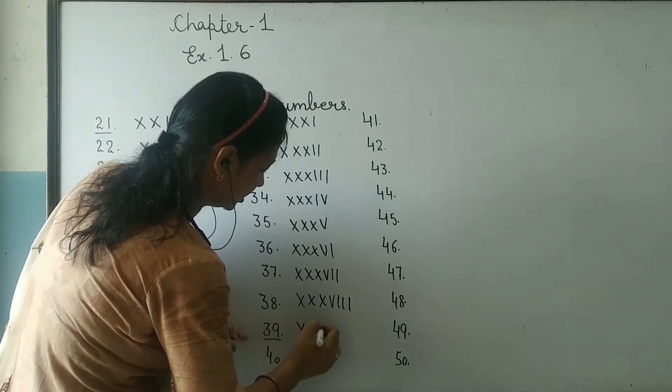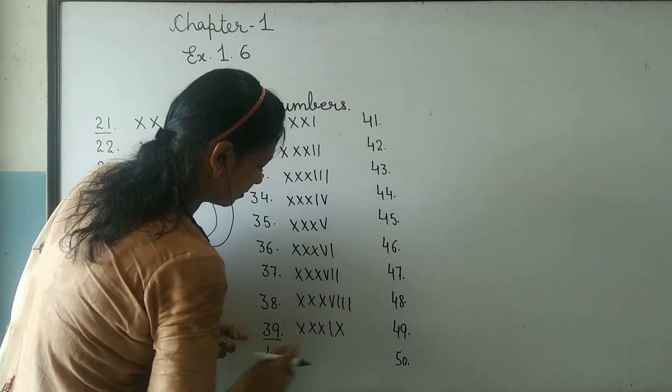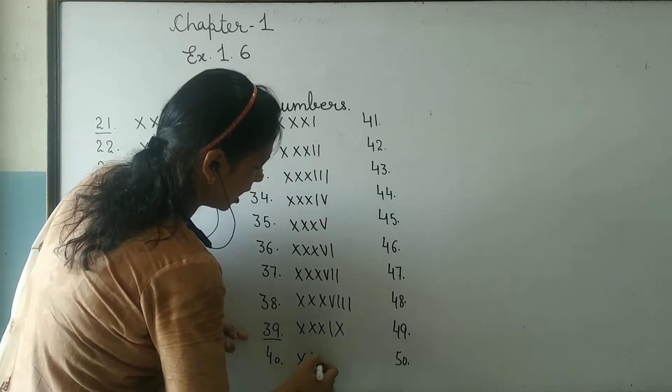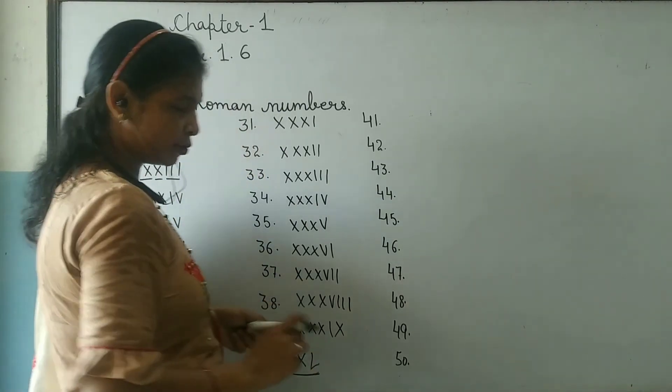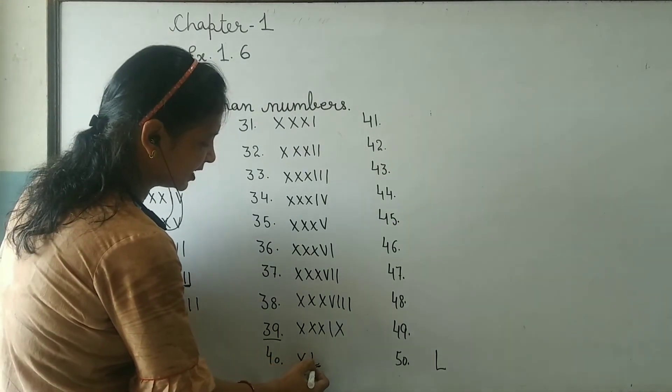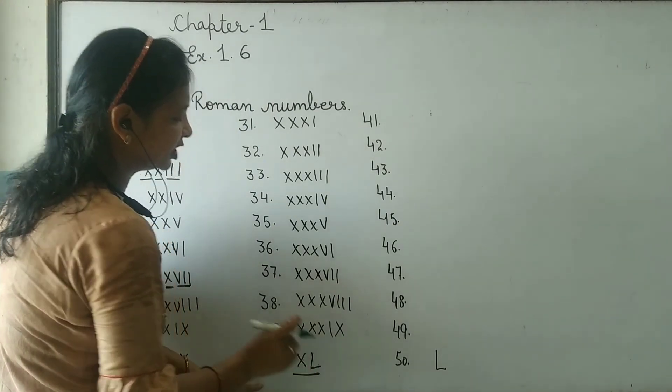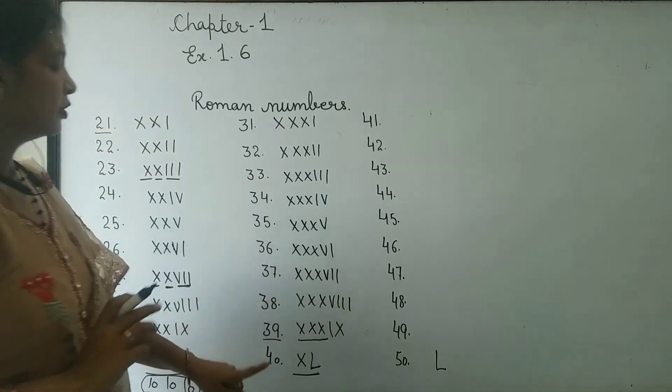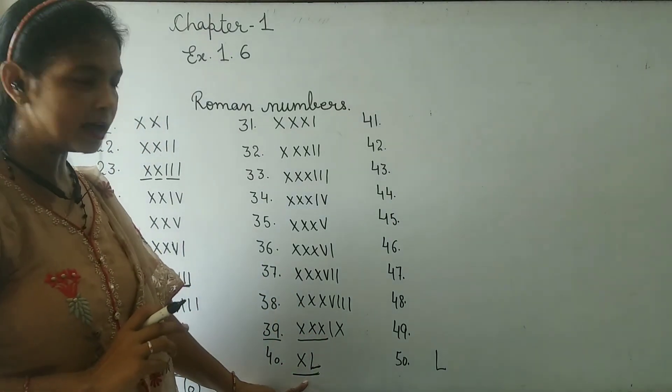Now 39, how do you write? First 30, then 9. Then 40. We write 40 as XL. Why do we write XL? Because 50 is L, so 10 before 50 is 40. If we write XL, then the number becomes 40.